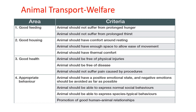Another way of explaining animal welfare requirements: good feeding means animals should not suffer from prolonged hunger or thirst. Good housing means animals should have comfort while resting, enough space for ease of movement, and thermal comfort. Good health means animals should be free of physical injuries and disease, and should not suffer pain caused by procedures. Appropriate behavior means animals should have a positive emotional state, be able to express normal social behaviors and species-typical behaviors, and there should be promotion of good human-animal relationships.